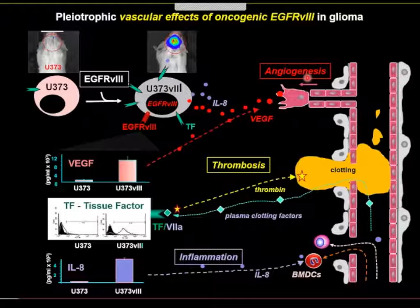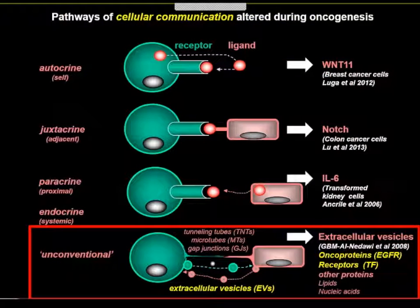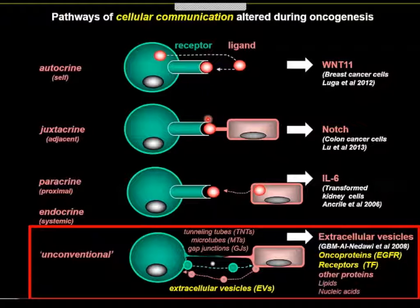For example, oncogenic mutation of EGF receptor variant 3 drives strong upregulation of vascular endothelial growth factor, as well as tissue factor and interleukin-8. These factors are involved in angiogenic, pro-coagulant, and inflammatory responses associated with glioblastoma progression. The oncogenic mutation can be viewed as a trigger of multiple interactions with different facets of extracellular or vascular compartments accompanying tumor progression.